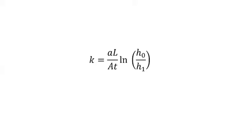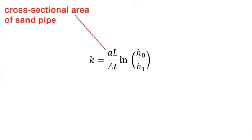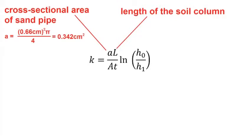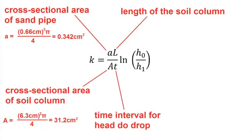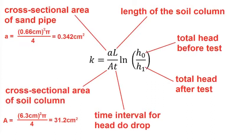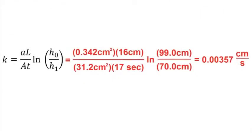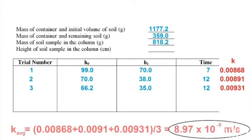This is the equation for the coefficient of permeability for the falling head test. Lowercase a is the cross-sectional area of the standpipe; the internal diameter is given as 6.6 millimeters, from which we get the area. L is the length of the soil column — in our case, 16 centimeters. Uppercase A is the cross-sectional area of the soil column; the cylinder diameter is 6.3 centimeters, giving a cross-sectional area of 31.2 square centimeters. T is the length of time taken for the head to drop. H0 and H1 are the total head before and after each test, respectively. Calculate K for each test, then find the average value of K across all three tests to get the hydraulic conductivity. This concludes the falling head test in the hydraulic conductivity lab.